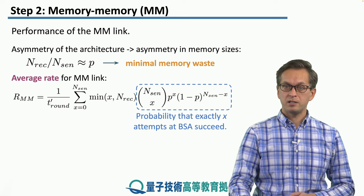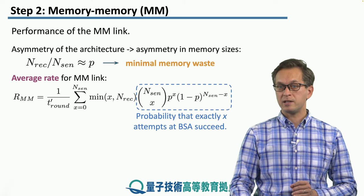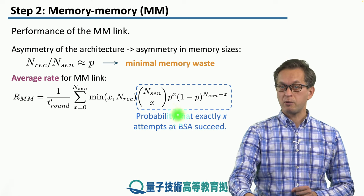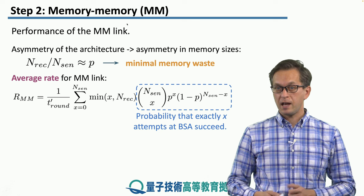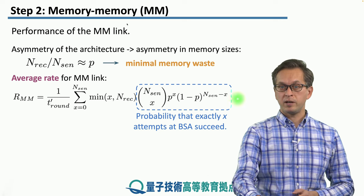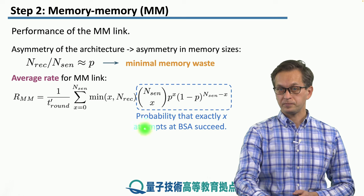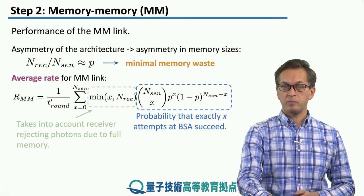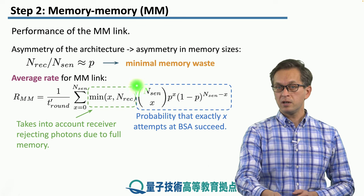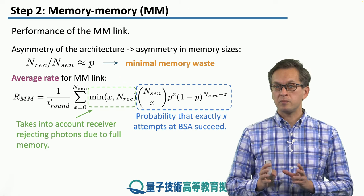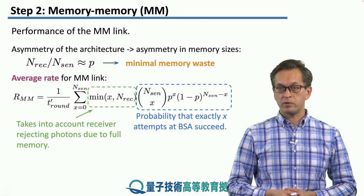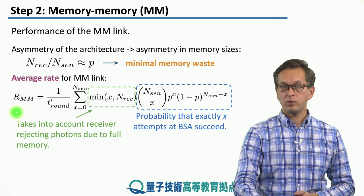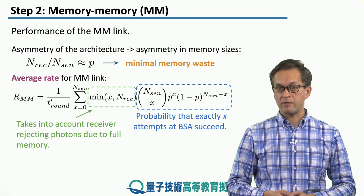This expression is the probability that exactly X attempts at BSA succeed: P to the power of X successes, and exactly N_sender minus X failures. This can occur in a number of different ways quantified by the binomial coefficient. In the next expression, given by the minimum of X and N_receiver, we take care of the fact that the memories at the receiver end might be full and there are simply no more memories to entangle with the sender's memories. We sum over all X, then divide by the duration of the round, and that gives us the average rate for an MM link.